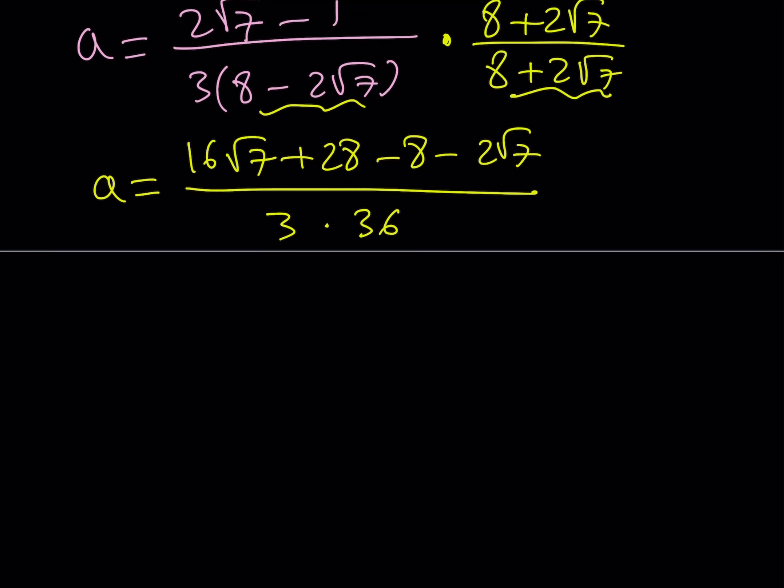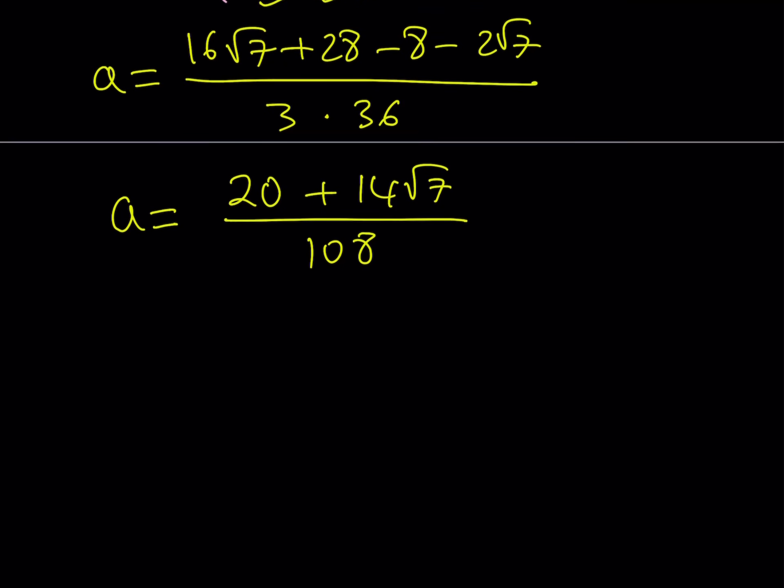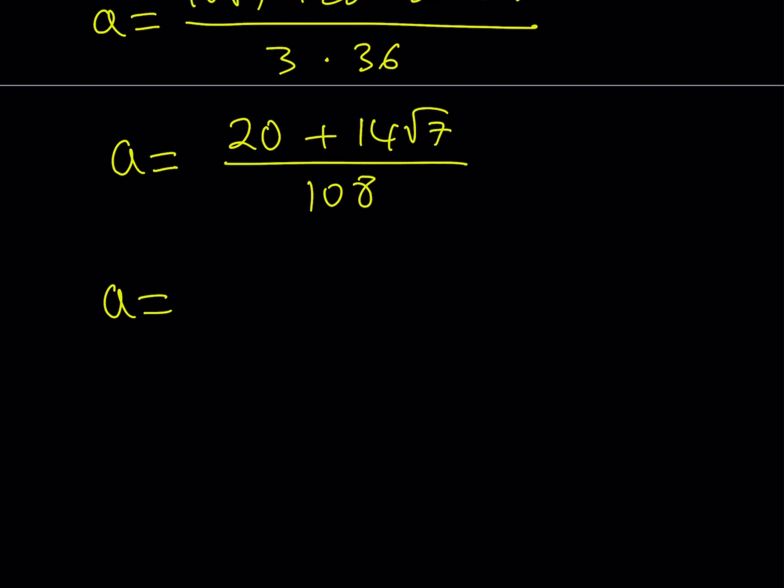Now let's simplify the numerator. The numerator gives me 14√7, should I write the integer first maybe? I don't know. 20 + 14√7, this is probably more standard. And then this is divided by 3 times 36 which is 108. But this can be simplified. And I can write it as (10 + 7√7)/54. So this is my first a value. Let's call it a₁.